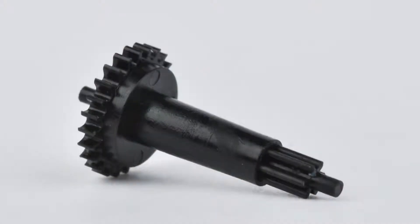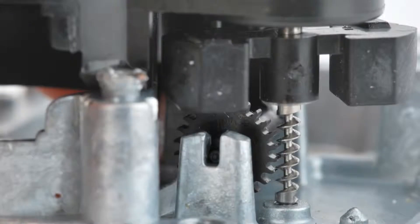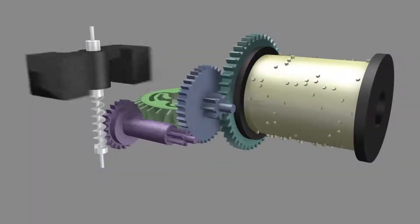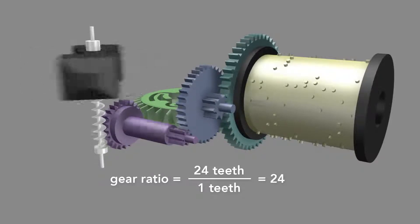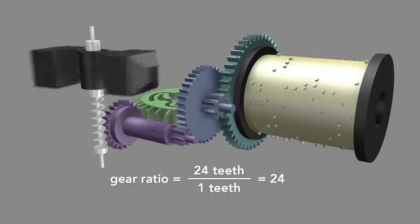The gear that engages the worm screw differs from the other gears. It has curled teeth. The shape of these teeth allows it to better engage the screw. The worm screw turns once for every tooth on the gear, and since there are 24 teeth, it multiplies the rotational rate by 24 times.